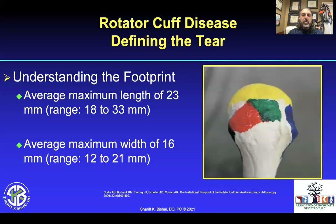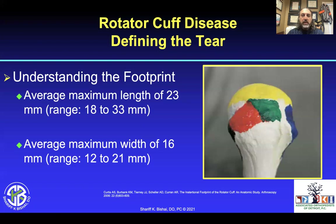It's important to understand the tuberosity and how to define where the cuff is going to return to. In this Alan Curtis article from 2006 in Arthroscopy, the color coding excellently shows where the supraspinatus will sit, where the infraspinatus, teres minor, and subscapularis attach. It's also important to note the variance that sometimes the infraspinatus attachment area will actually be posterior and lateral to the supraspinatus. It's important to see the direction the supraspinatus needs to seat — more anterior and lateral, not just straight lateral. So it's important to view from the lateral side to appropriately position this rotator cuff for repair.